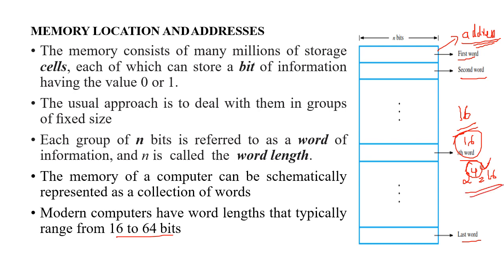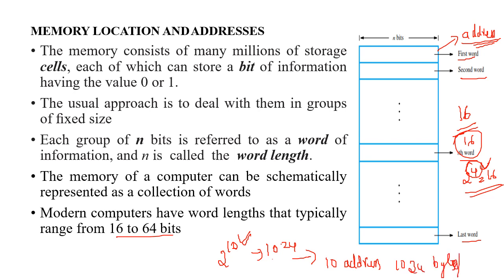This can be represented in powers of 2. To address a 16-byte space, you need 4 address lines. Similarly, if you want to address 1 kilobyte of memory — that is 1024 bytes — you can represent it as 2 to the power 10, so you need 10 address lines to address 1024 byte or word locations.